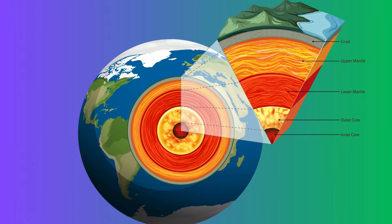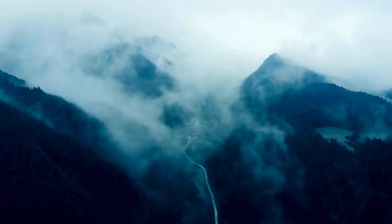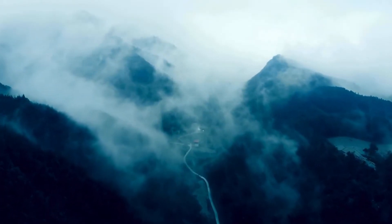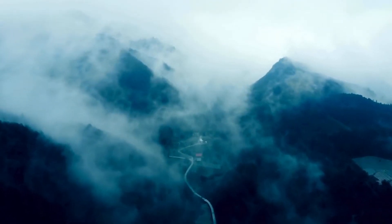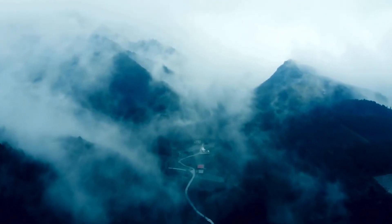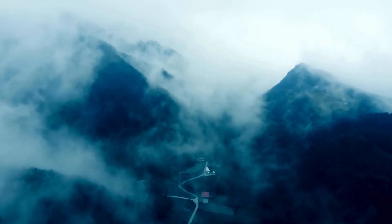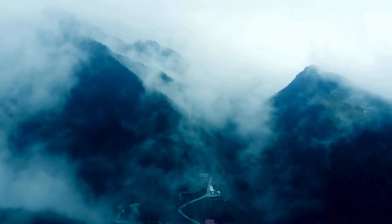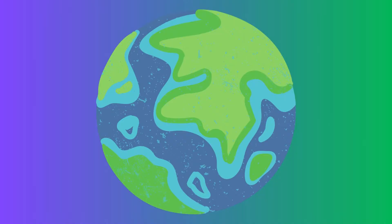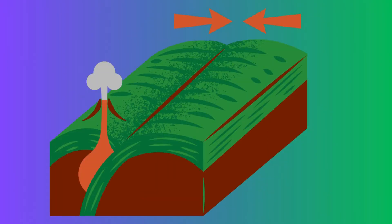The crust and the very top of the mantle form a solid rocky shell around Earth. It is broken into many sections called plates. A plate is a large section of Earth's crust on top of the mantle. Earth's plates float on the partly melted rock of the mantle. Earth's surface is broken into about 20 plates, and many of Earth's plates are huge.